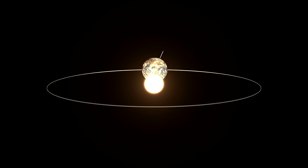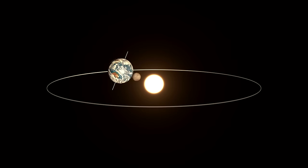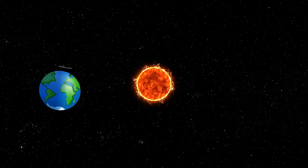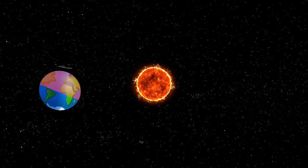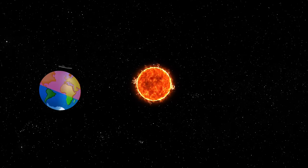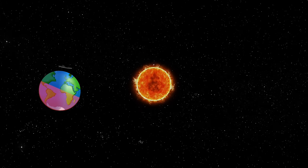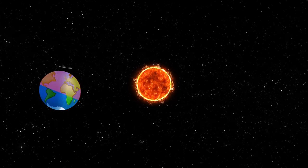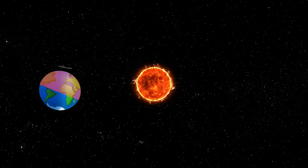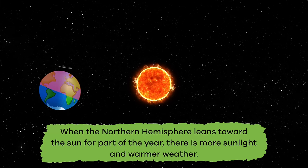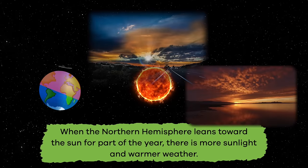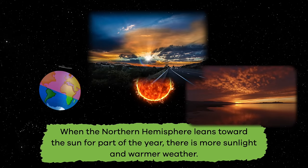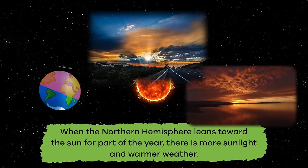Remember when we mentioned that seasons are related to the earth's rotation? Now we are going to show you how. When the earth rotates around the sun, one half, or hemisphere, leans toward the sun, and the other half leans away. Let's look at the northern hemisphere, or top half of the earth, as an example. When the northern hemisphere leans toward the sun for part of the year, there is more sunlight and warmer weather.